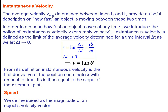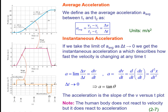Instantaneous velocity means your time interval is very small — you are talking about velocity at a particular instant. Δx/Δt gives average velocity; as Δt tends to 0, it becomes dx/dt, which is the slope of the x-t graph, equal to tan θ. The slope of the position-time graph gives velocity. Speed is the magnitude of velocity.